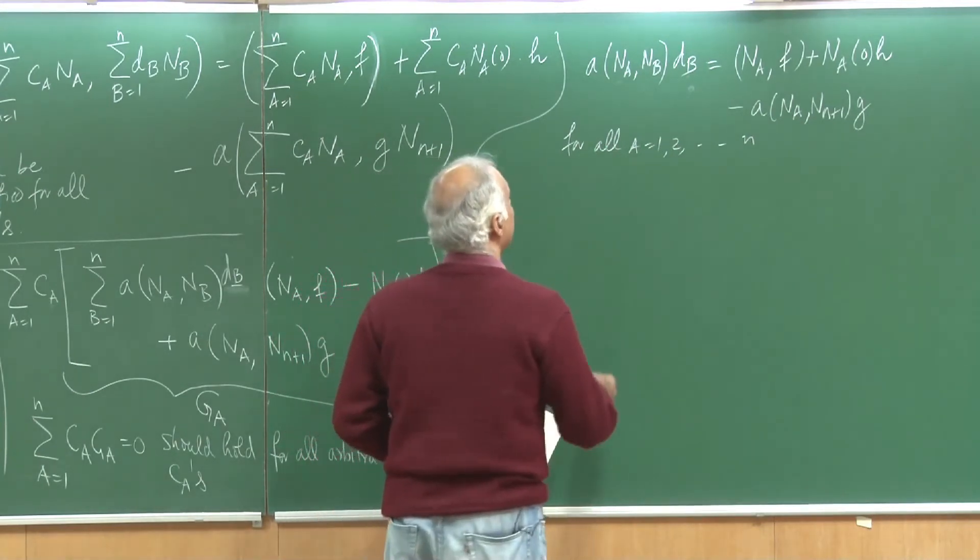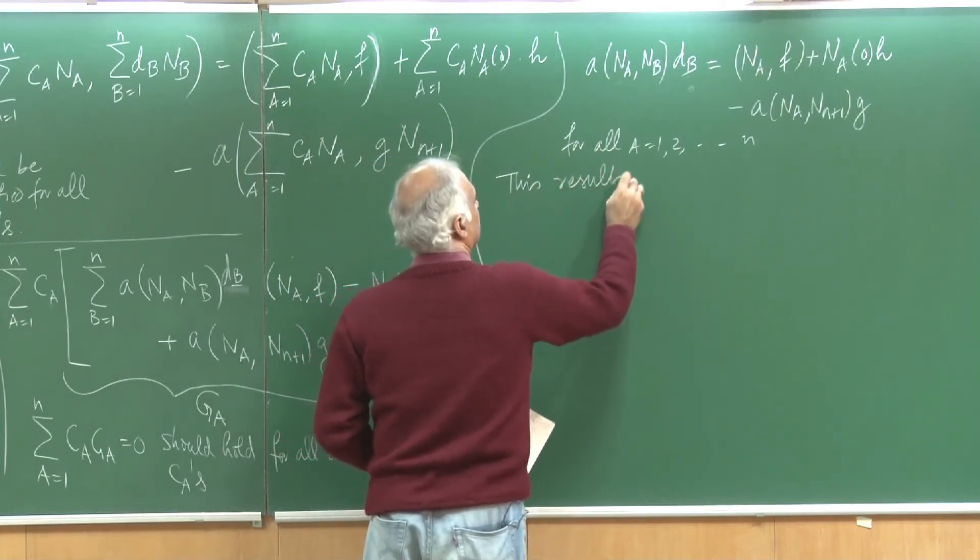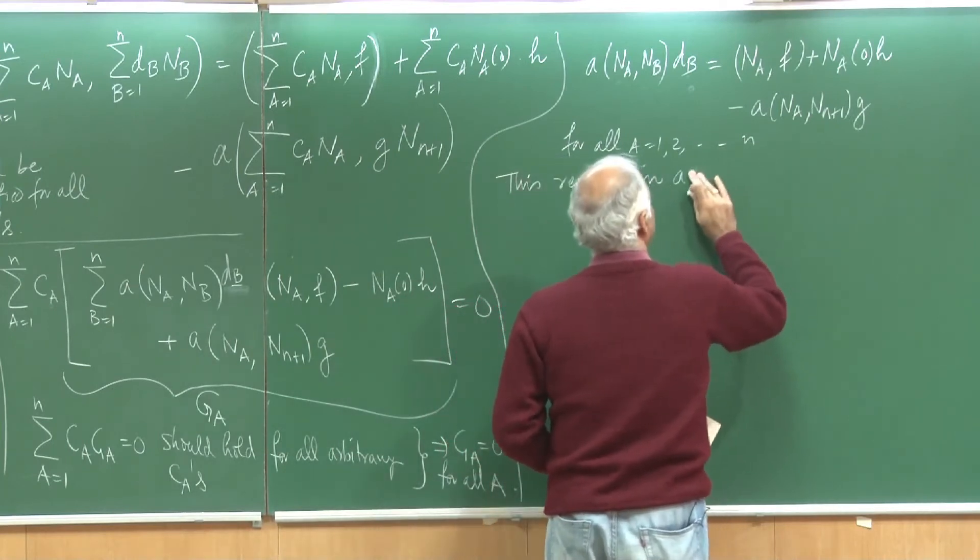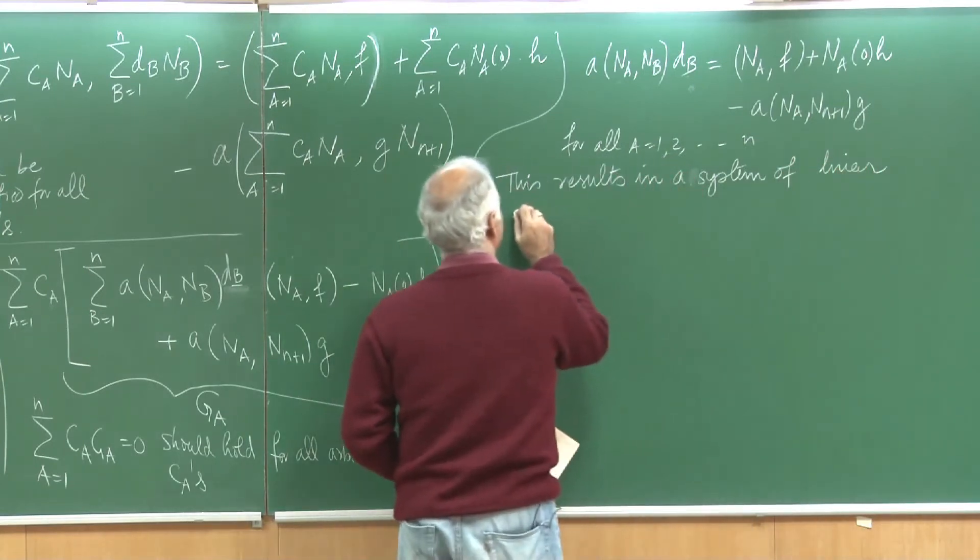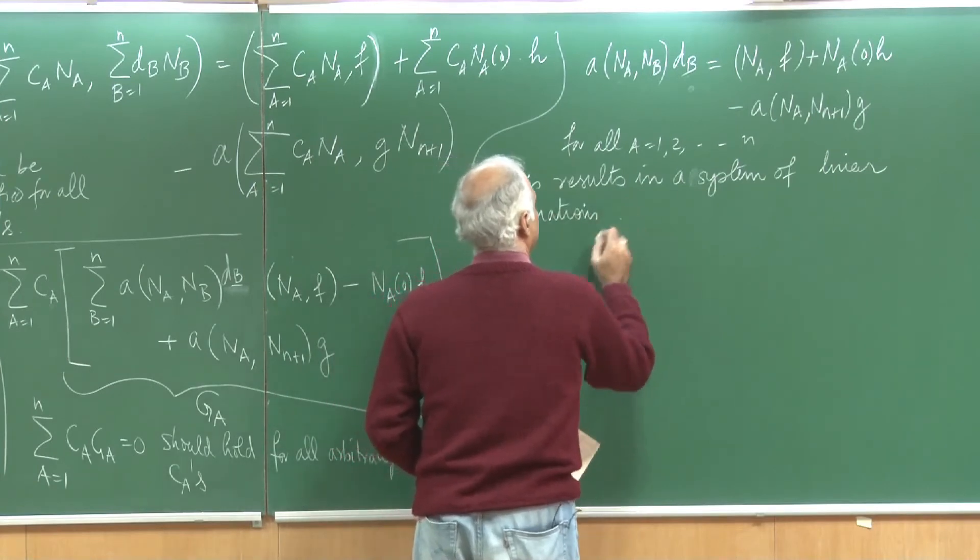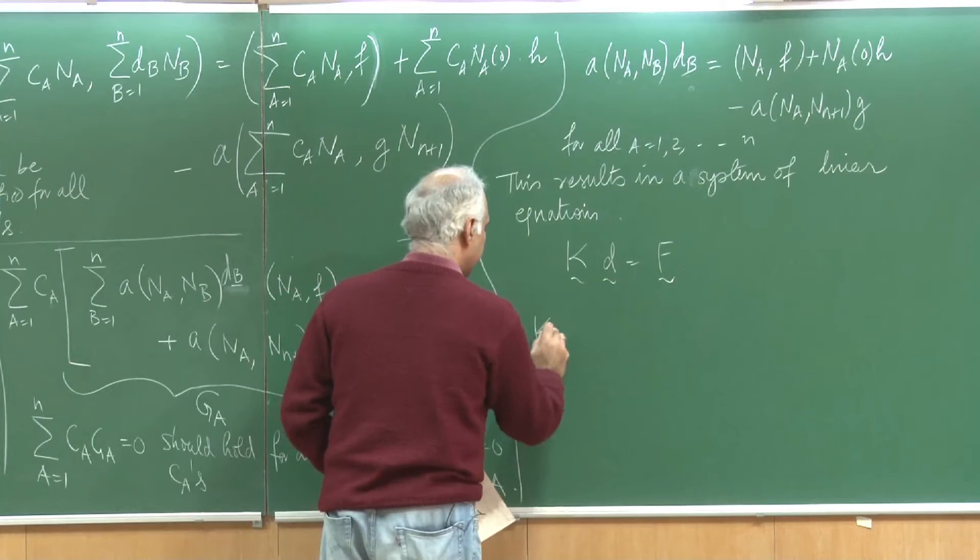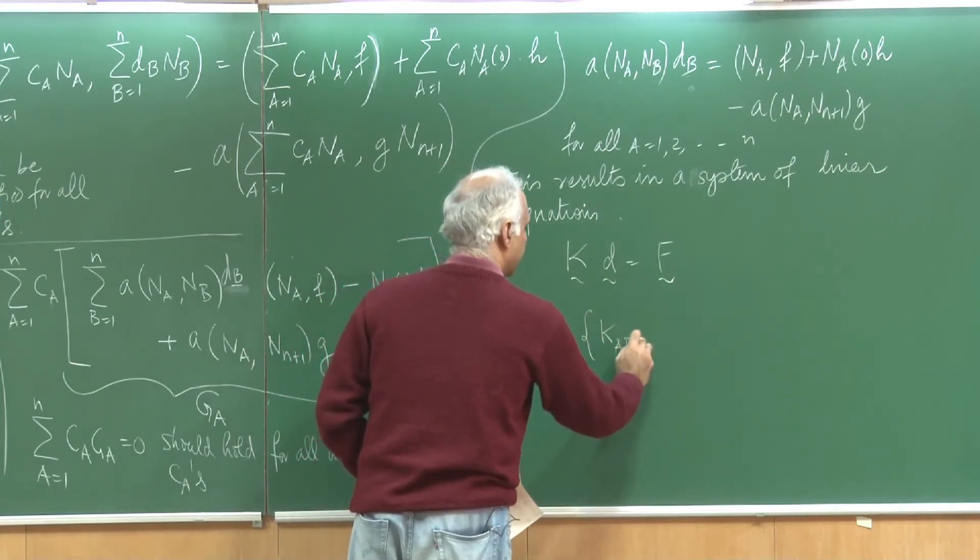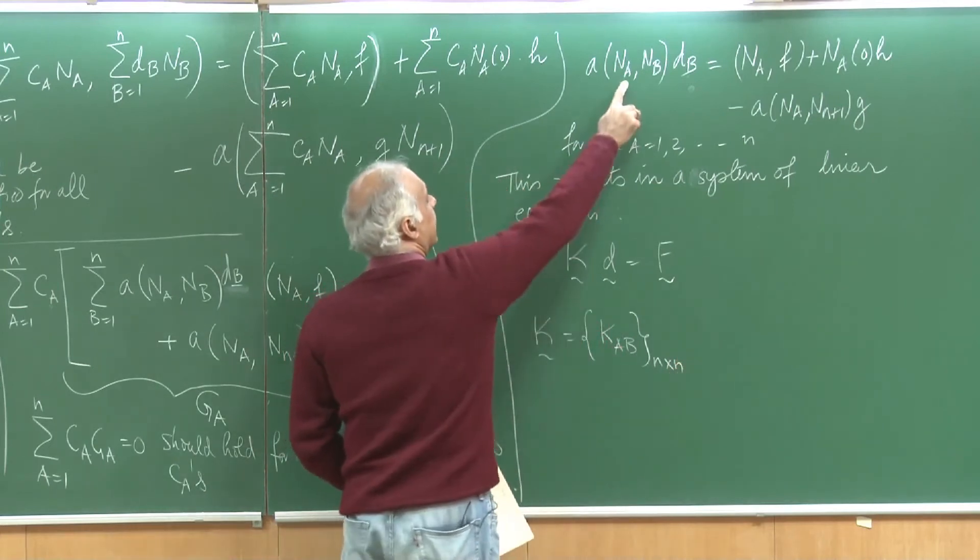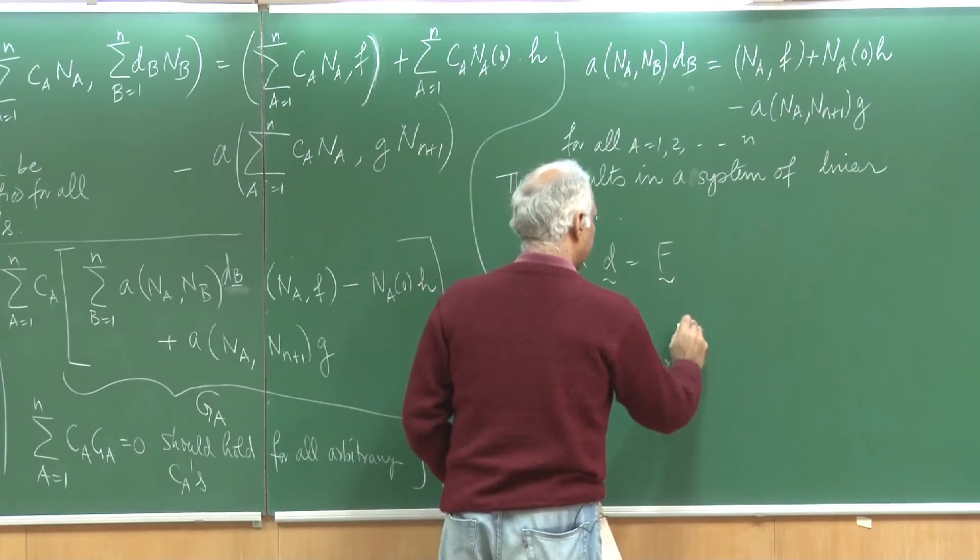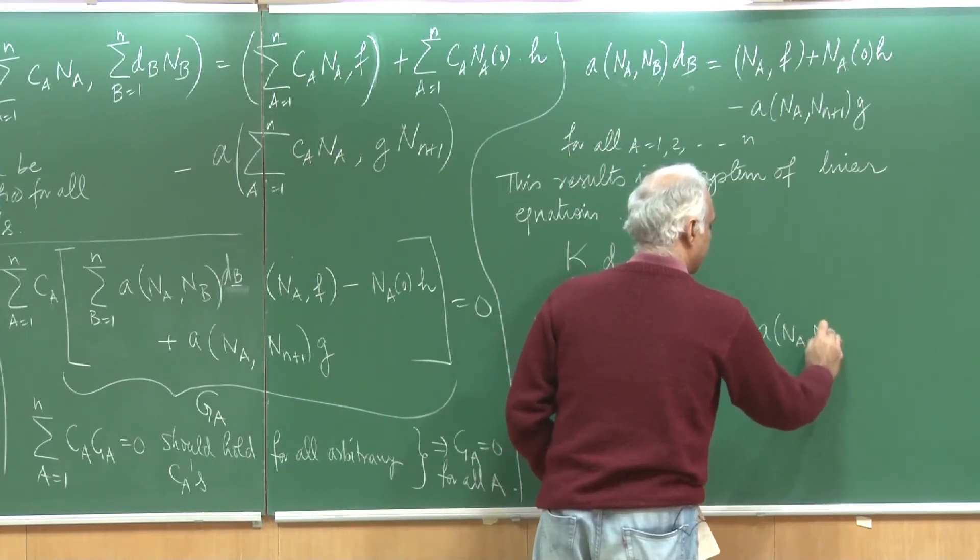Let us write this down in the following manner. This results in a system of linear equations which I want to represent as K d equal to f and you can see K is actually going to consist of these members K_ab and this is n by n because a goes from 1 through n, b goes from 1 through n and K_ab is given as a of n_a and n_b.